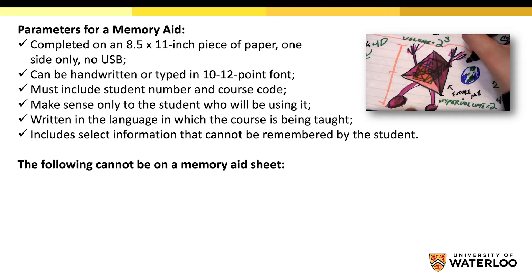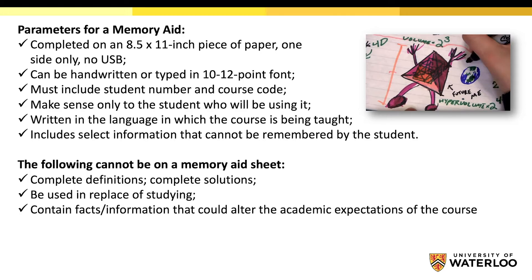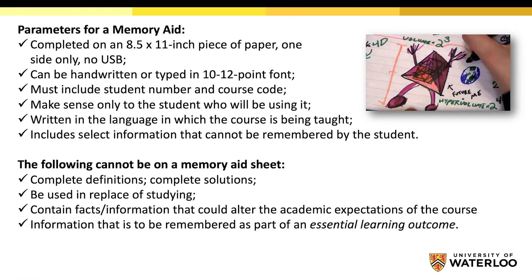What a memory aid should not include: complete terms and their definitions. In some cases, a key descriptive word or picture may be allowed to assist with a definition if it isn't deemed an essential learning outcome for the test. A memory aid is never to be used in place of studying. It cannot contain facts or information that could alter the academic expectations of the course. As well, it cannot include any information that is to be remembered as part of an essential learning outcome. Those aspects which are key or essential learning outcomes of the course will be determined by your professor.